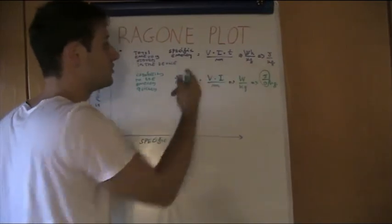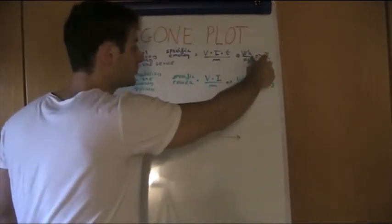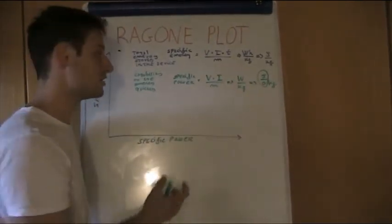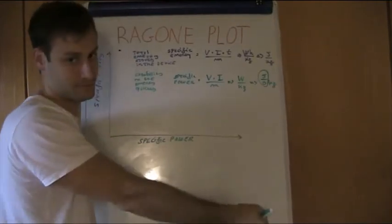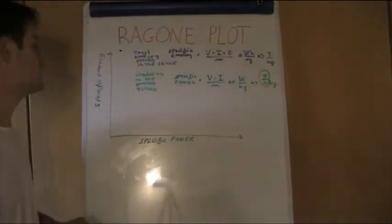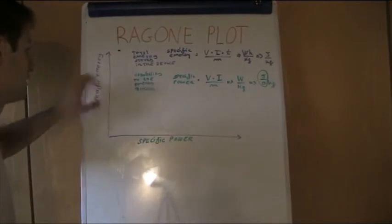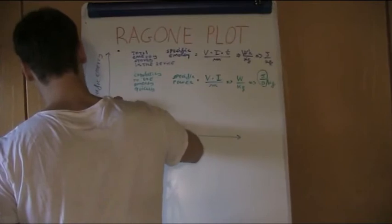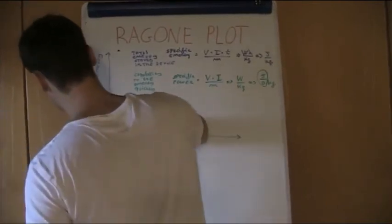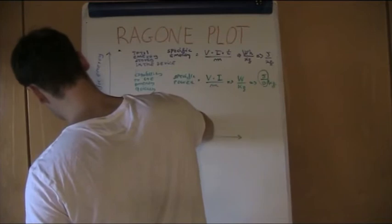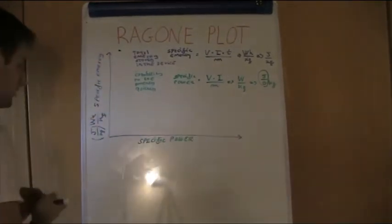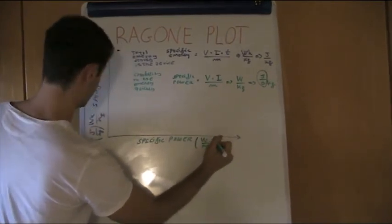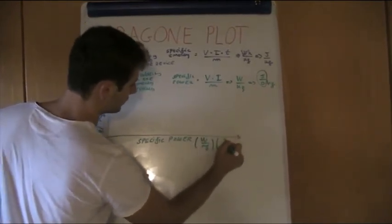Specific energy is the total energy per unit of weight, while specific power is the total power per unit of weight — that is, energy provided per unit of time per unit of weight. So specific energy is in watt-hours per kilogram, or joules per kilogram, while specific power is in watts per kilogram, which equals joules per second per kilogram.